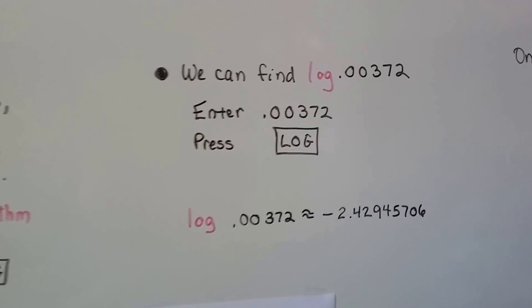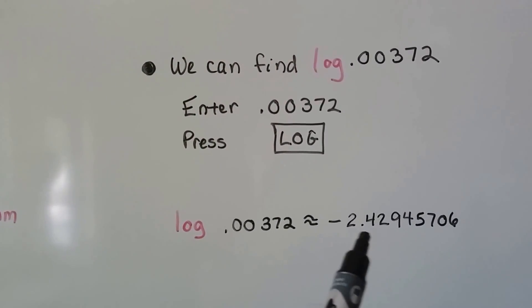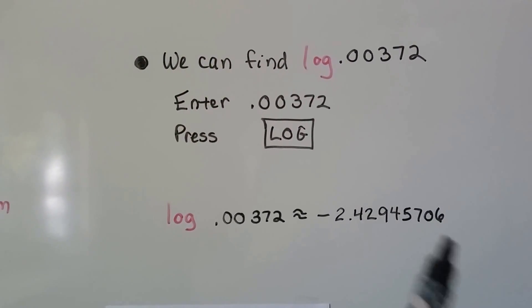We can find this one. We just enter 0.00372 and hit the log button. It tells us it's negative 2.42945706.